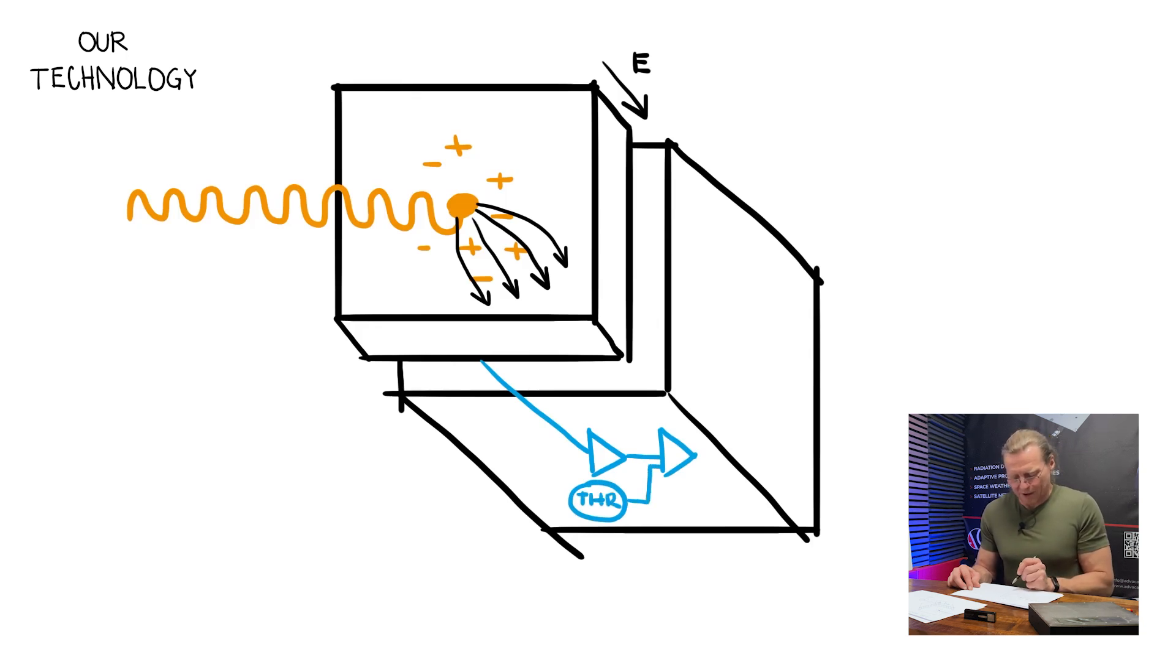And this amplified signal is then connected to the counter. And the counter counts one. There is one photon coming, there is number one. If there are more photons, multiple photons during the exposure time, it counts, for example, number of 1000 or whatever. And then of course, all those numbers in all pixels would create some intensity map, intensity matrix, which is the image we would like to have.